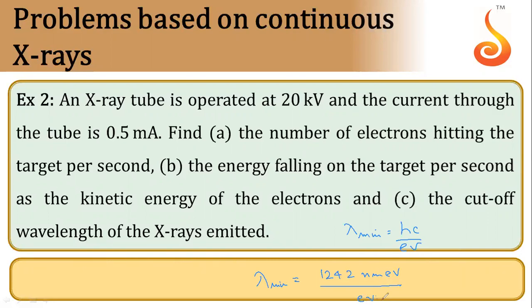Here voltage is given as 20,000 volts, so voltage is 20 into 10 raised to power 3 volts. Now from here, eV will get cancelled, so you'll get 1242 divided by 20 into 10 raised to power 3 nanometer. That will be our cutoff wavelength of X-rays being emitted. Thank you.